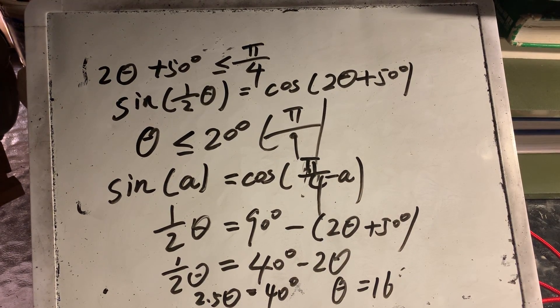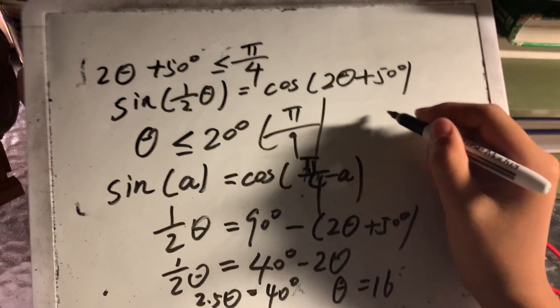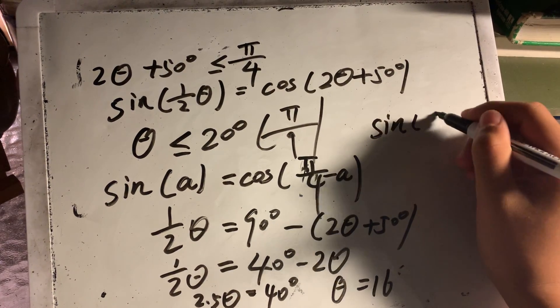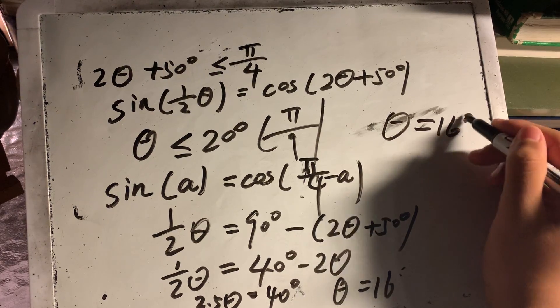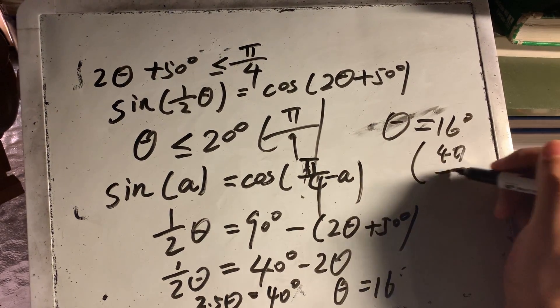16 degrees. So we can get that beta is equal to 16 or 4 pi divided by 45.